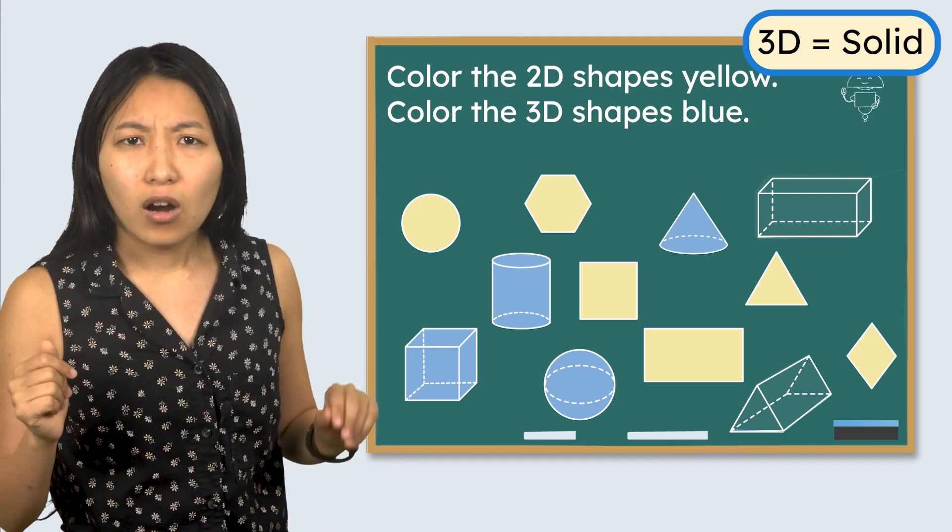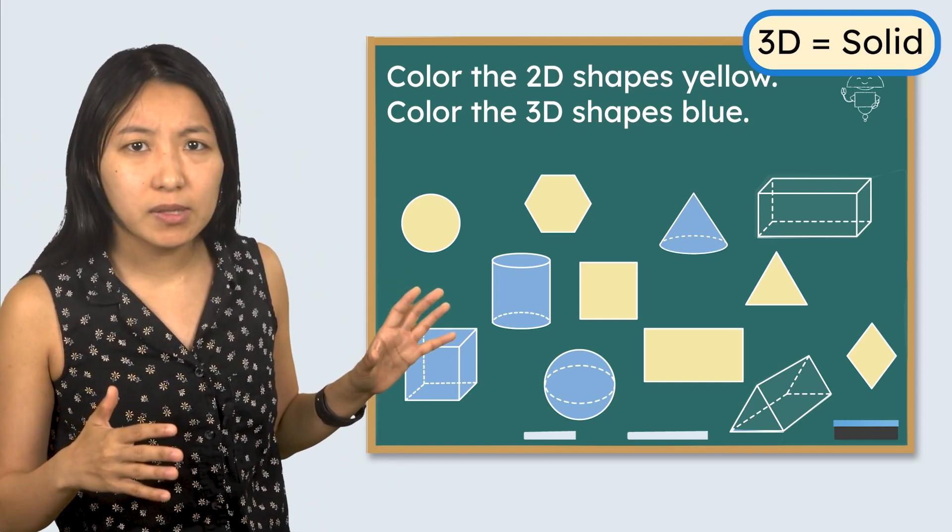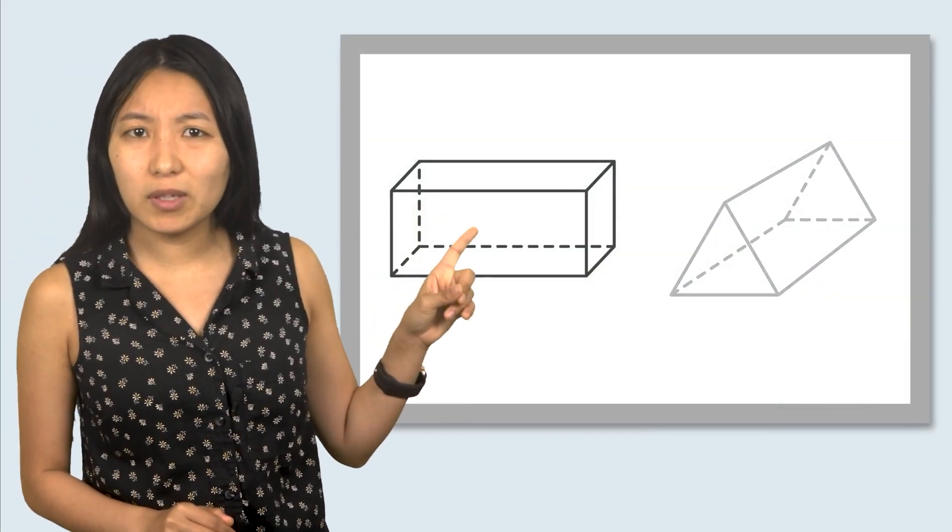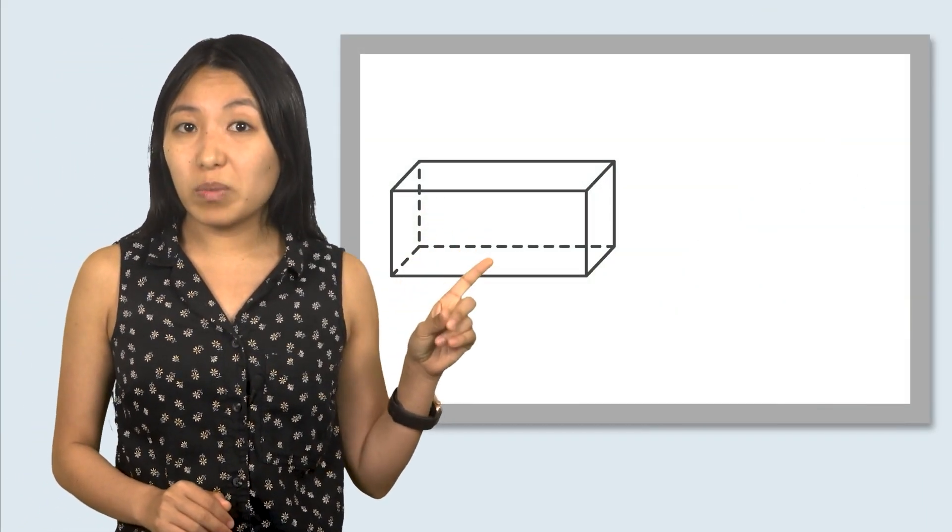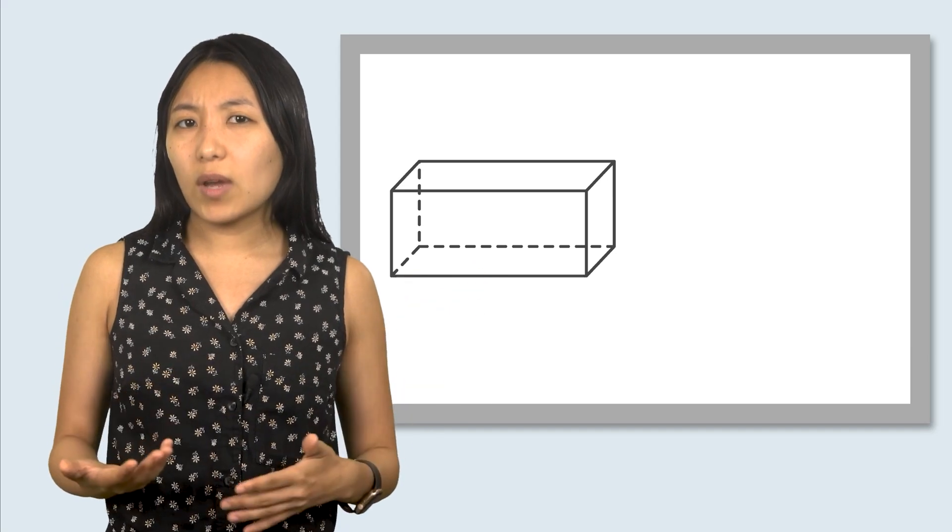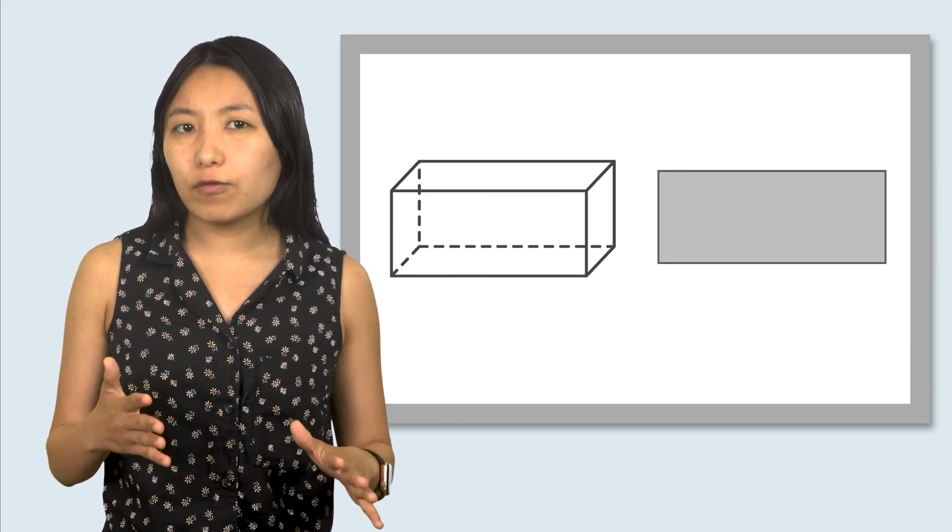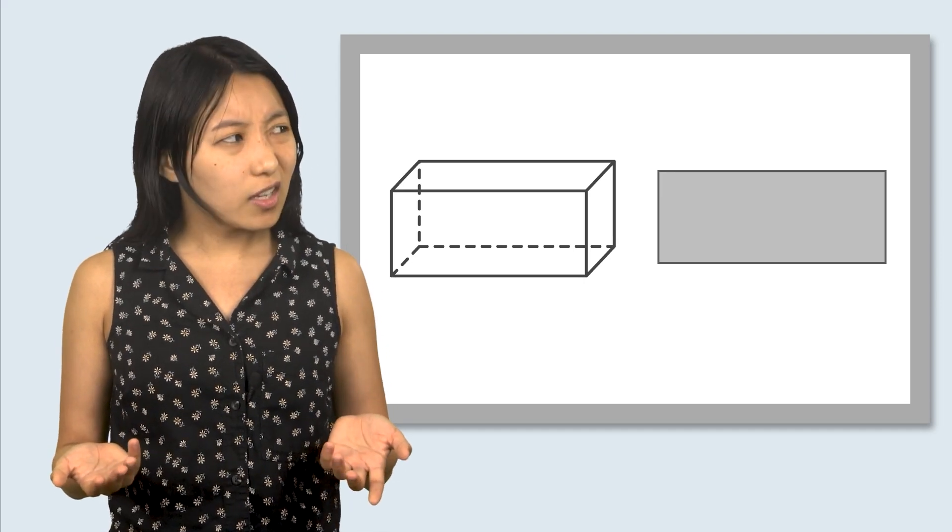Oh hang on. Are those more new shapes? Let's check them out. Oh these look kind of familiar. This one looks like a cube but its faces aren't all squares. If we took one of the faces off and looked at it by itself, what shape does it look like?